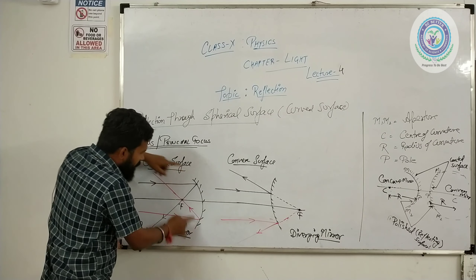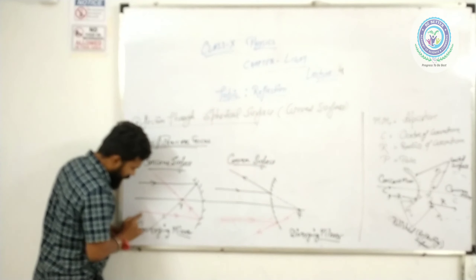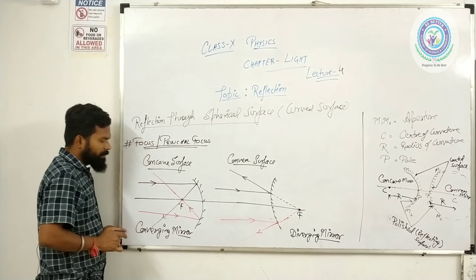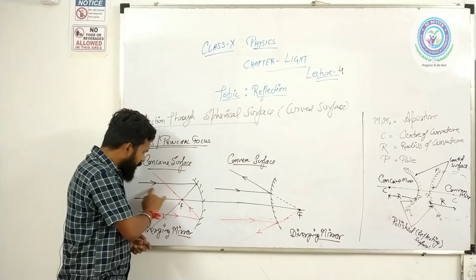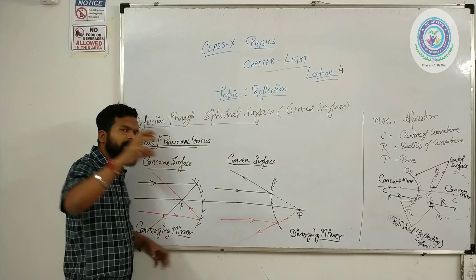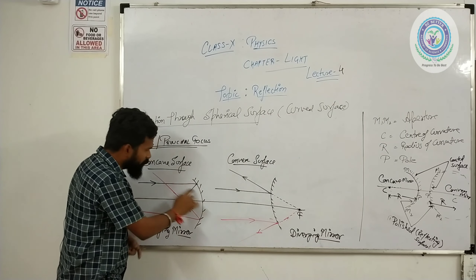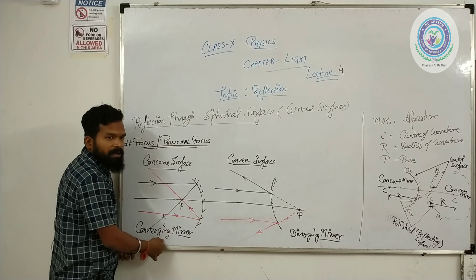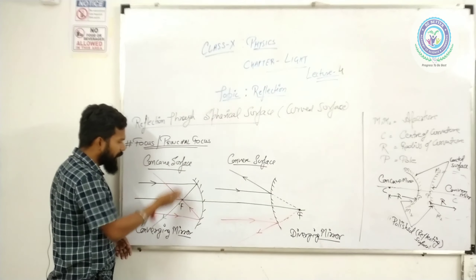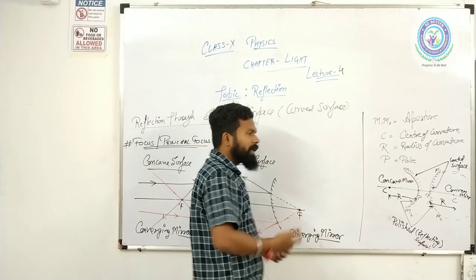यहाँ पे हमको दिख रहा है — यह incident ray और यह reflected ray यहाँ पे आके meet कर रही है। कहीं से भी light आएगी, reflection के बाद किसी एक point पे meet कर रही है, focus हो रही है — तो इसको हम बोलते हैं converging। यह surface converging की तरह behave कर रहा है।